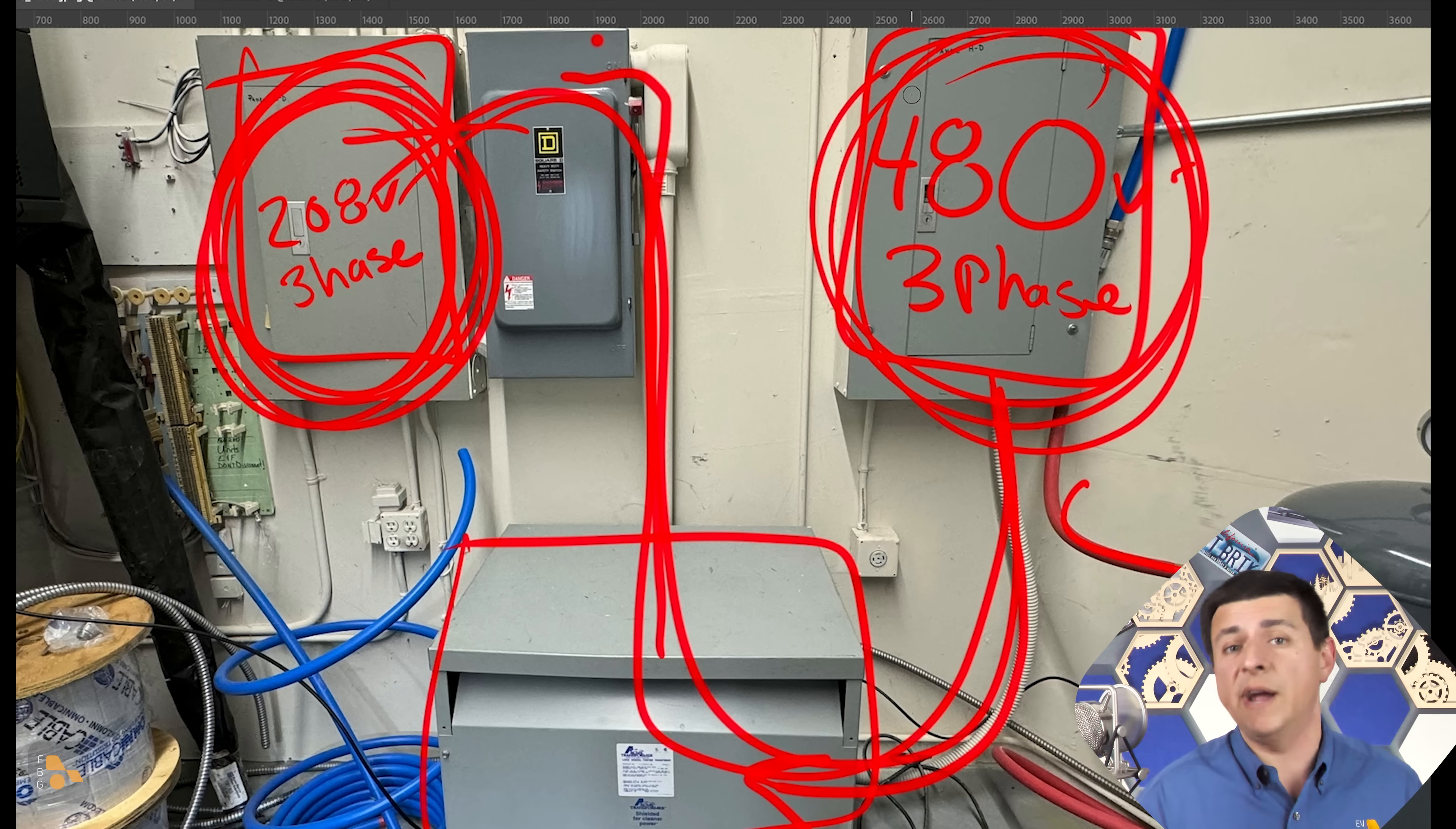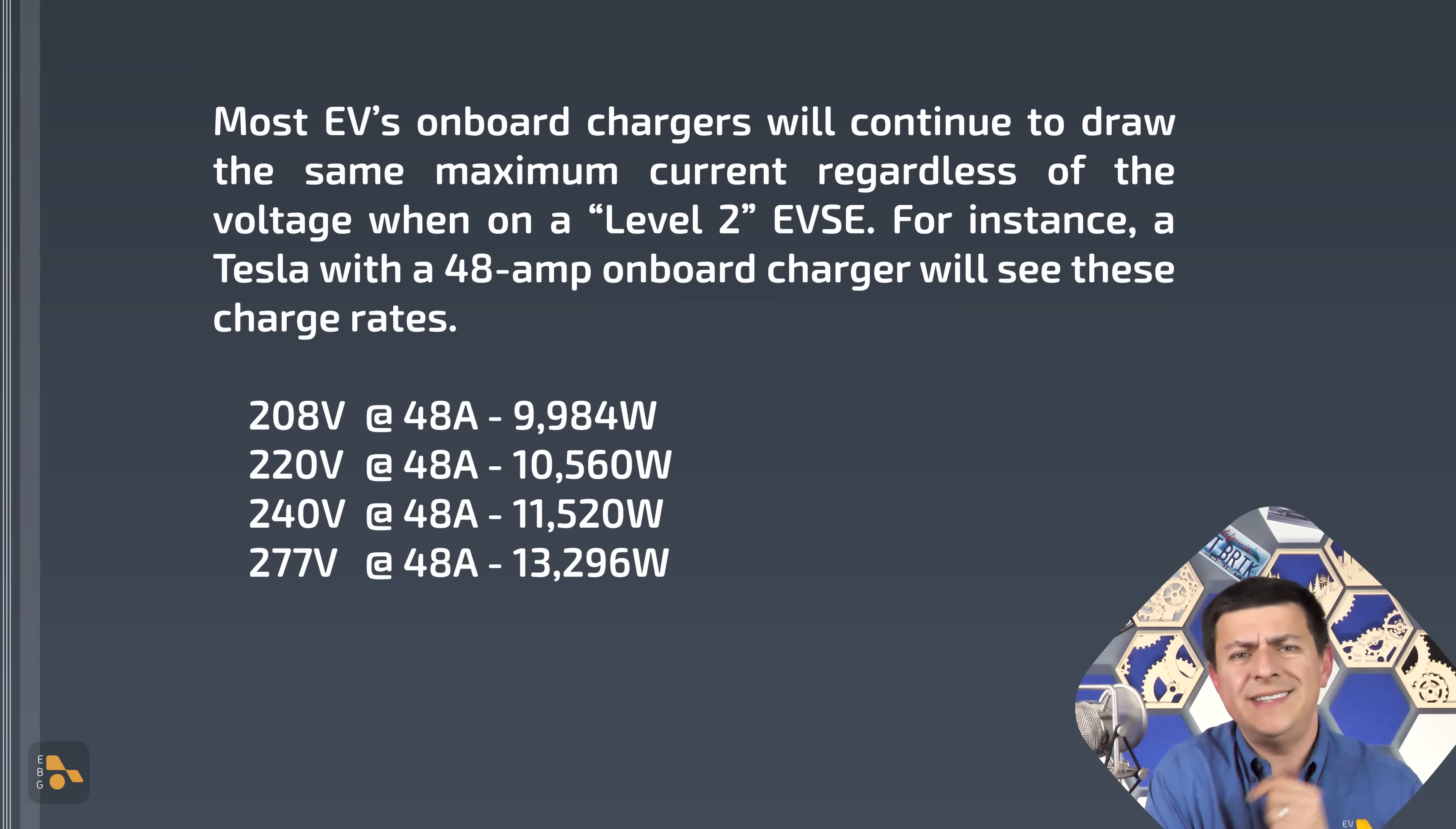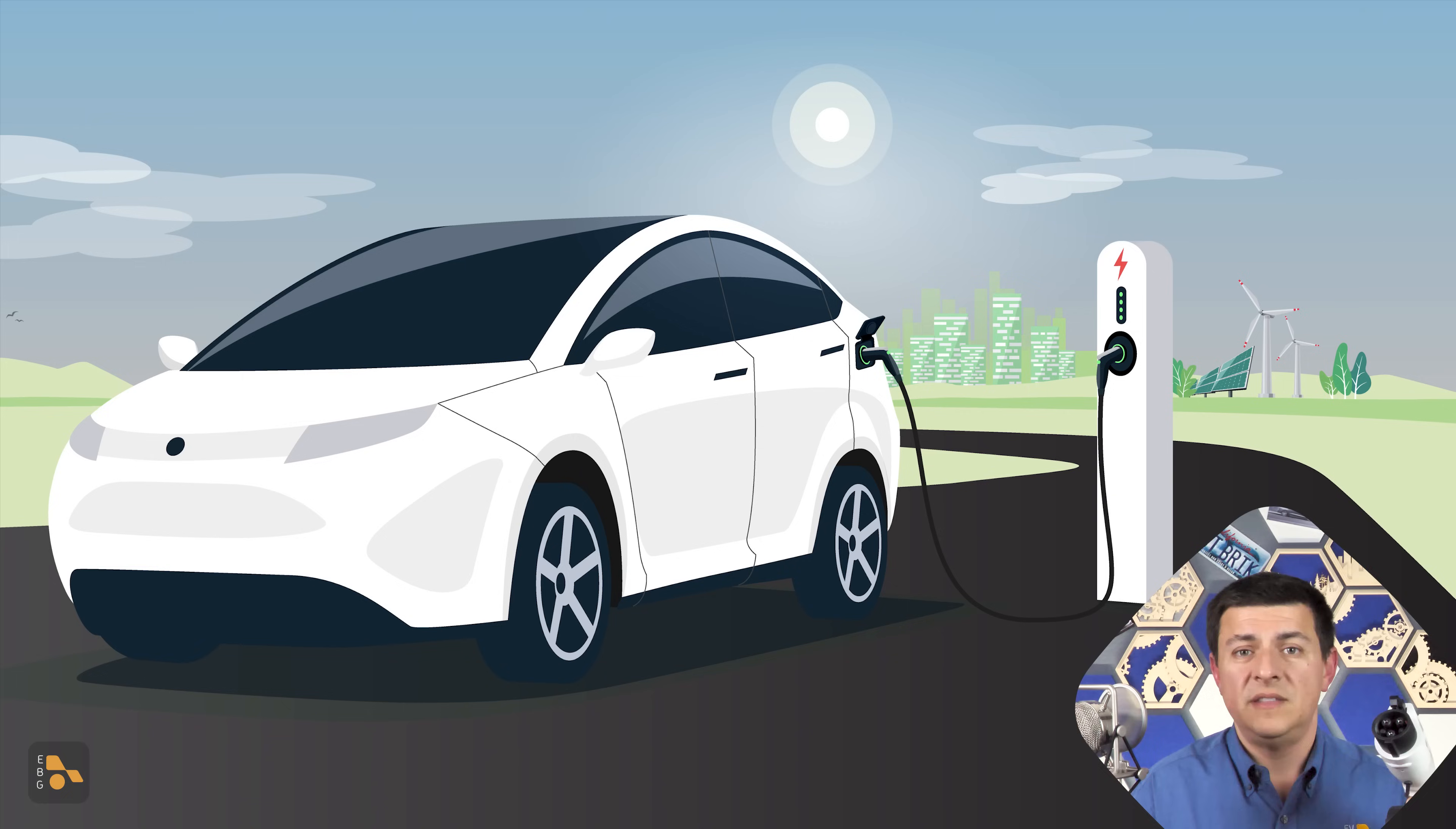If you've ever thought to yourself, gee, it seems like my EV charges slower at the office, you're not crazy. You're not seeing things. It is indeed charging slower. And that's because the onboard charger in most EVs is current limited, and it doesn't change that current limit based on the voltage you give it. Say, for instance, a Tesla Model Y. Its onboard charger maxes out at 48 amps. 48 amps, 240 volts is 11.5 kilowatts. But 48 amps at 208 volts, that's rather sadly only 9.9 kilowatts. It's going to take longer to charge your battery. But if you plug that Model Y into 277 volt power, it will actually suck down 13.3 kilowatts and make that charging notably quicker.